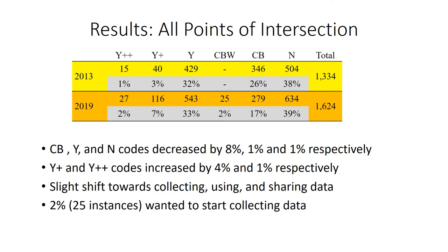I will now start to review the results with all points of intersection. As you can see from the table, the change between 2013 and 2019 indicates that the CB, Y, and N codes had respective decreases of 8%, 1%, and 1%, whereas the Y-plus and Y-plus-plus codes had respective increases of 4% and 1%. These changes indicate a slight shift towards collecting, using, and sharing data. We also see that the 'could be and I want to start collecting data' code represented 2% of all codings, or 25 instances where librarians wanted to start collecting data. The CBW and CB codes are combined for analysis and comparison because there were no CBW codes in 2013.